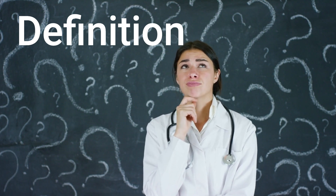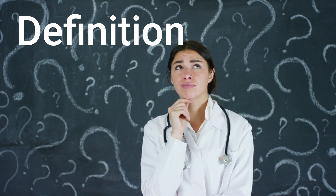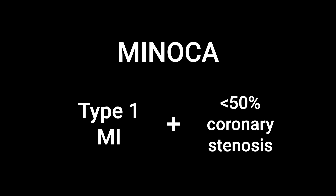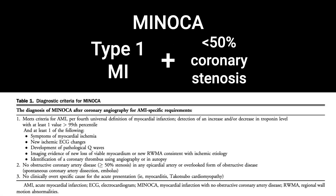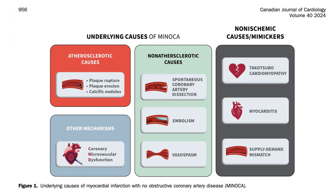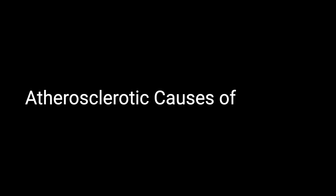So what is the correct definition of MINOCA? By definition, MINOCA is a myocardial infarction — myocardial ischemia with troponin elevation — in the absence of significant coronary obstruction, after excluding other causes for the acute presentation. We can classify the causes of MINOCA into two broad categories: atherosclerotic and non-atherosclerotic.